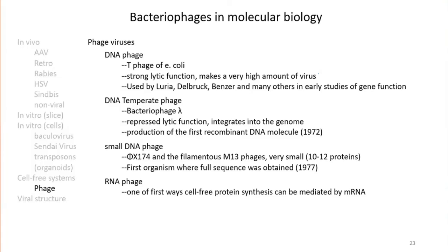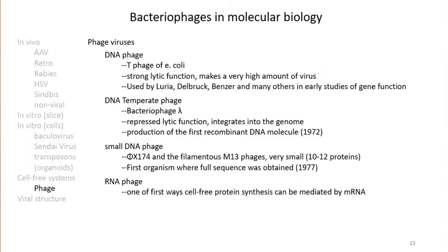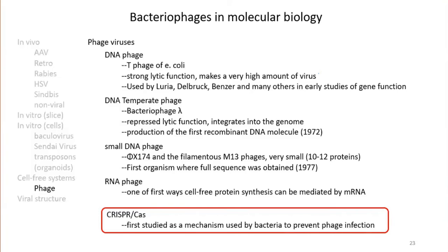Phages are not just historical curiosities — they're a massive part of life. In the oceans, they turn over something like 10 to 20 percent of the ocean's biomass in a ludicrously short time. Studying phage biology has yielded major discoveries, most recently the CRISPR-Cas9 system — a bacterial defense mechanism against phage infection. This illustrates a greater point: almost nothing we use in biology was invented from scratch. We take something nature is already doing and tweak it for our own purposes.